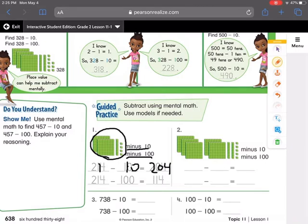But on the second one, we have a 2 in the hundreds place. And a 1 in the hundreds place because we're subtracting 100. And we end up with 114.